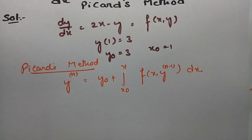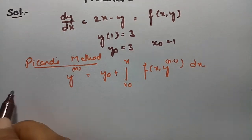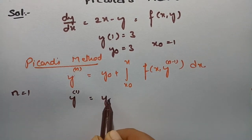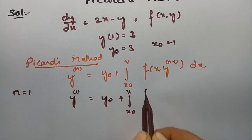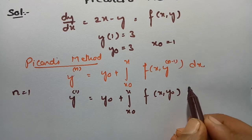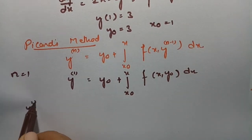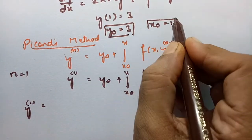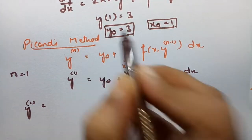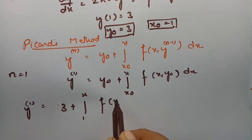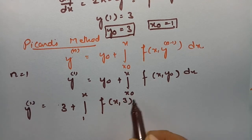In this formula we have to keep the values of n. First of all I am going to keep n = 1. So the first iteration is y₁ = y₀ plus integral from x₀ to x of f(x, y₀) dx. The y₀ value is 3 and x₀ value is 1, so now I am going to substitute: 3 plus integral from 1 to x of f(x, 3) dx.